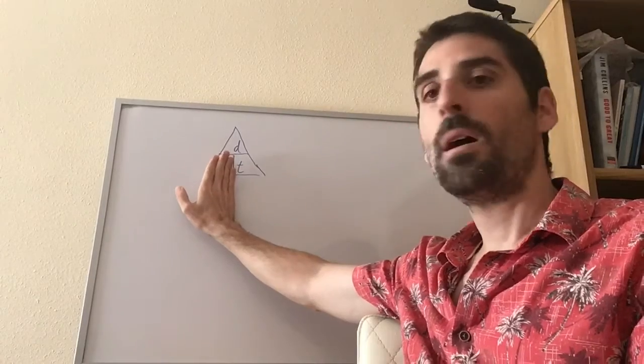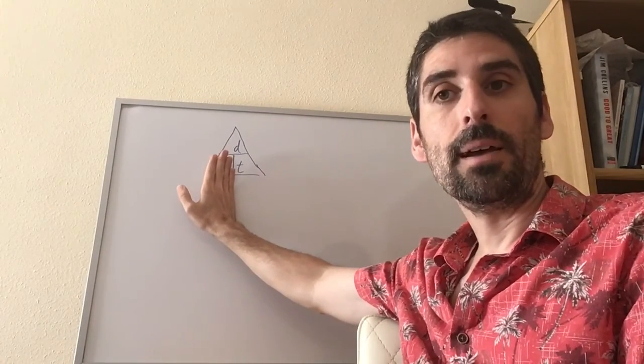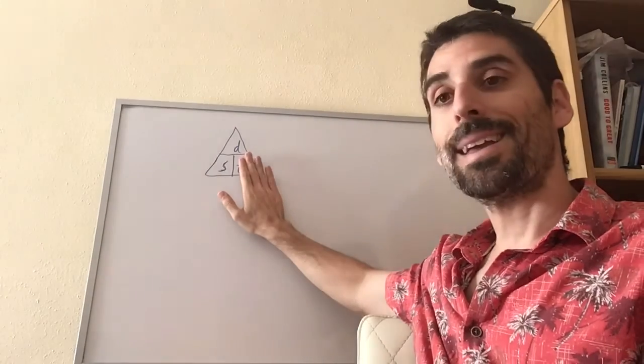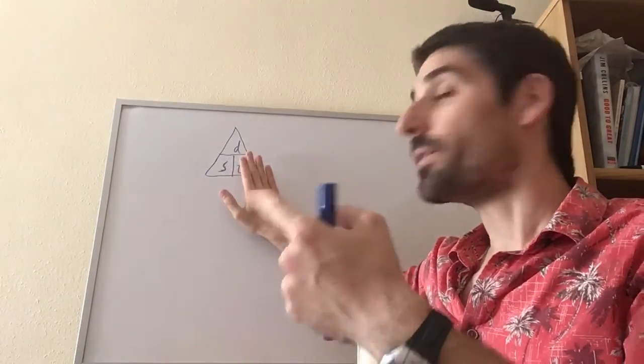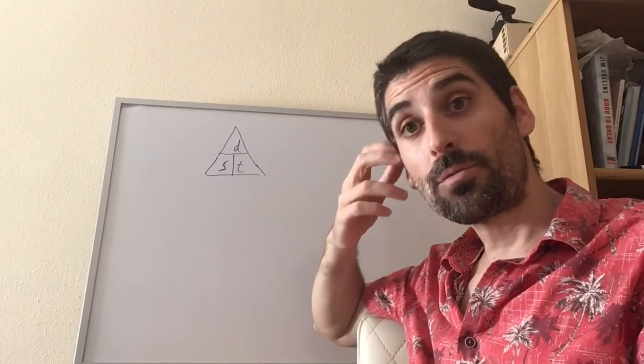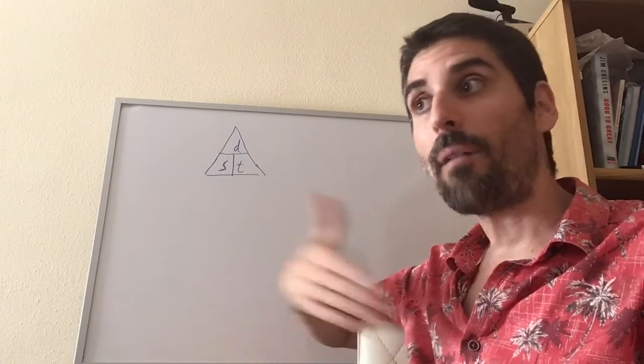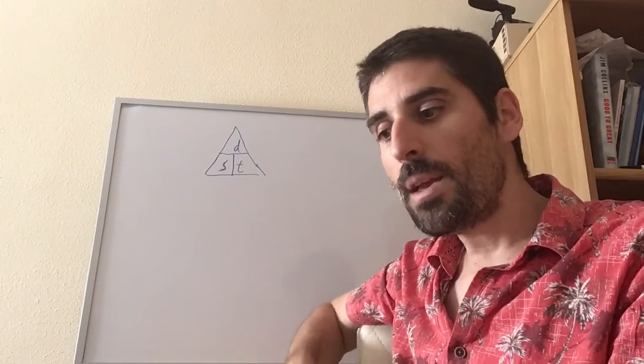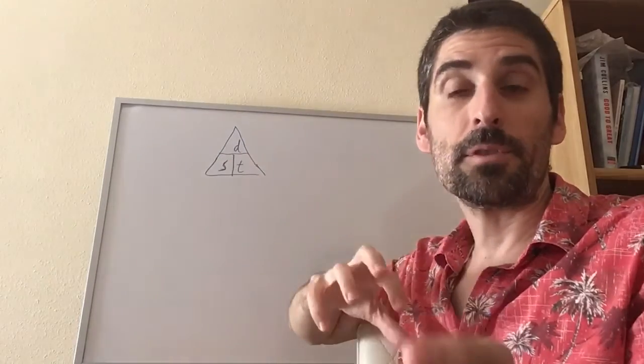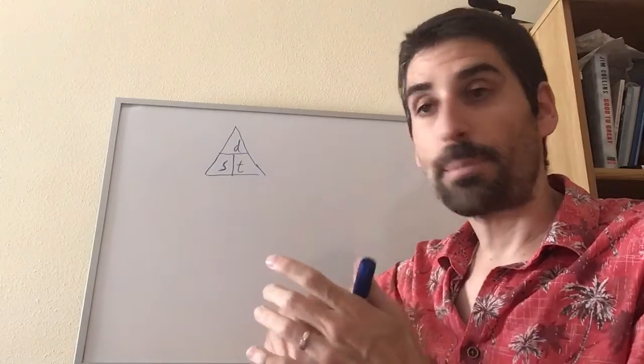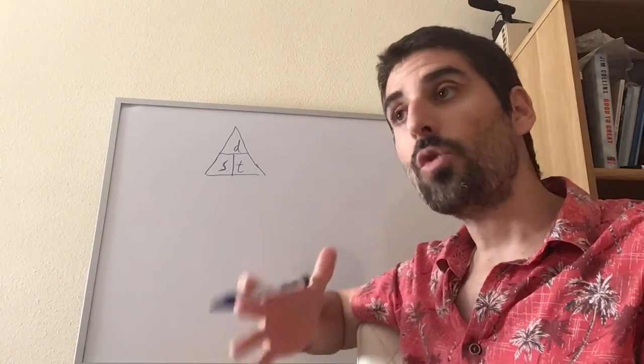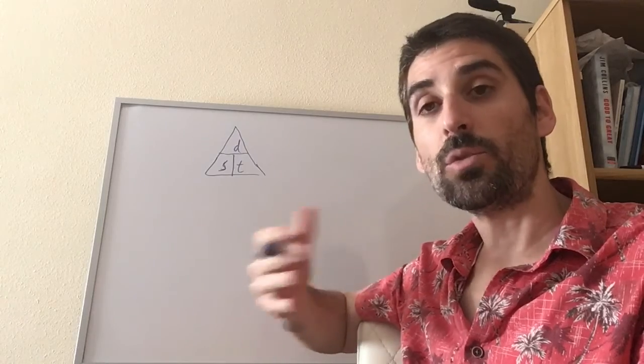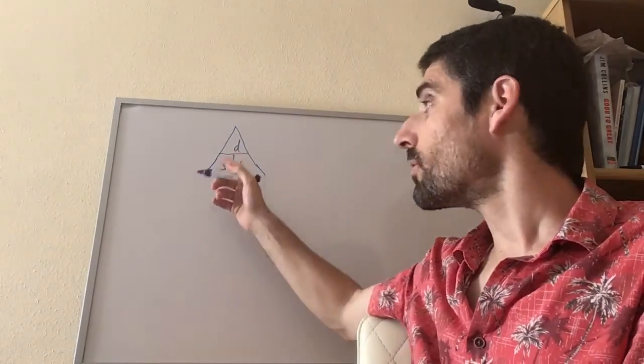So the way this works, you may have seen it before in physics or whatever. If I want to find the speed, I can cover the speed up and what I get is D over T—that means divide the distance by the time. Say I wanted to find the time, if I cover the time I get D over S—that means I divide the distance by the speed. And say I wanted to find the distance if I know the speed and the time, if I cover the distance I get S next to T—that means times, so speed times time. So that's one way to know whether sometimes you multiply, sometimes you divide. This may help.